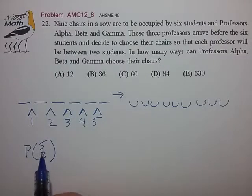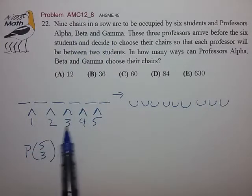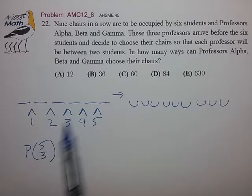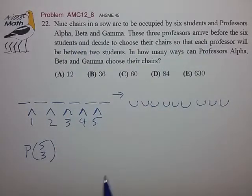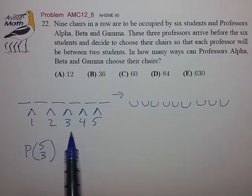It turns out to be the permutation of the five gaps chosen three at a time. And we choose a permutation instead of a combination because if, for example, we selected Alpha, Beta, and Gamma to be in gaps two, three, and four, it actually matters from the interpretation of this problem whether Alpha is in two and Beta is in three or vice versa.